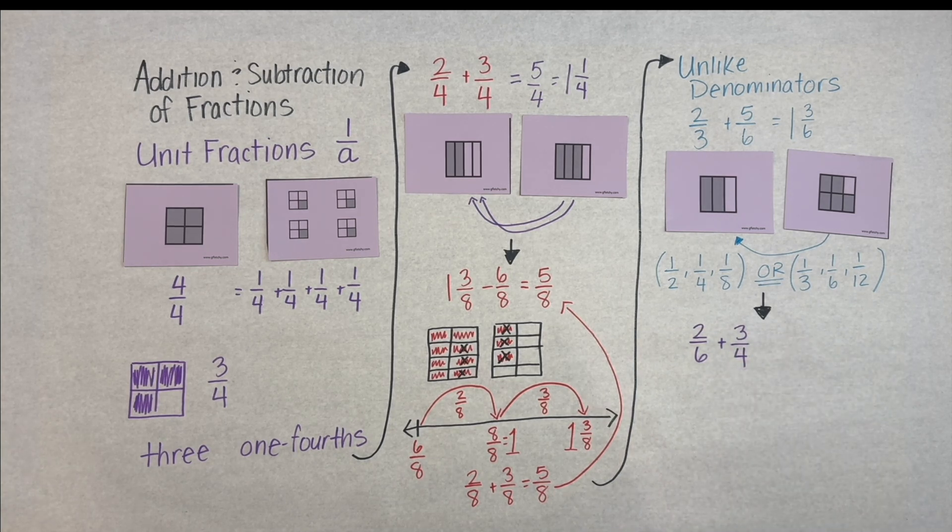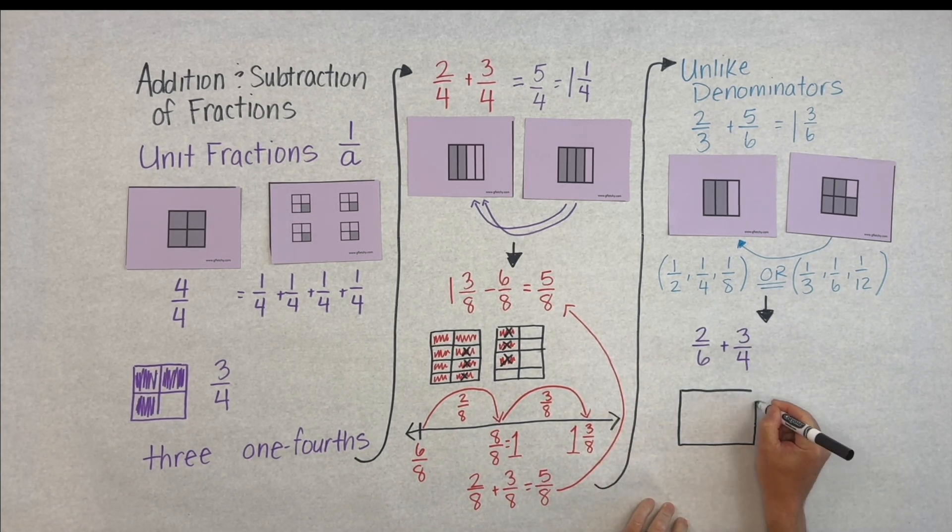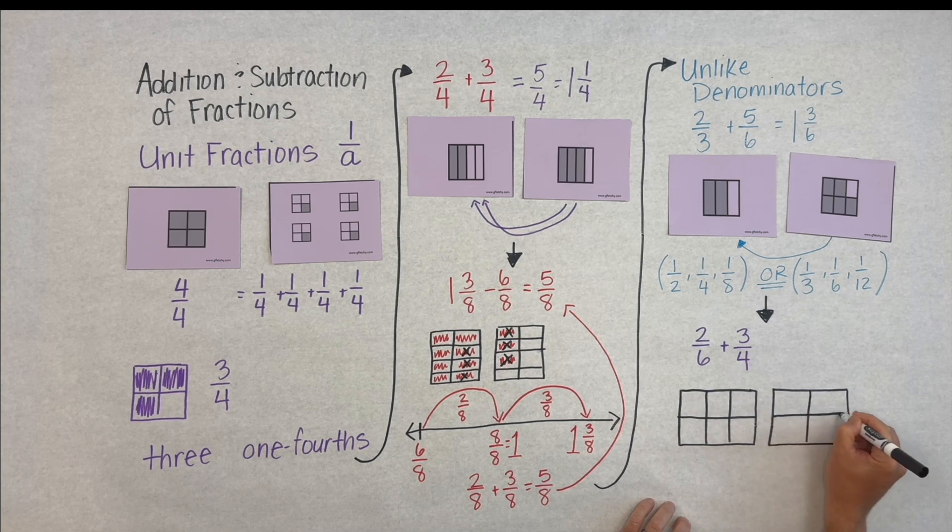And then eventually we get to some fractions that might be a little messy. Like when we're adding two-sixths and three-fourths, those are not friendly units. So what do we do? Well we need to find common units or a common denominator.